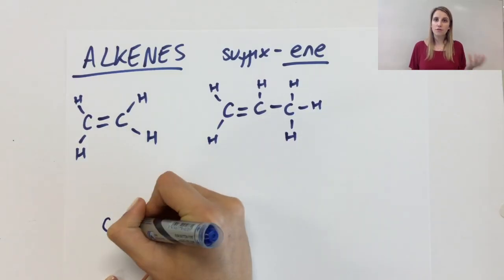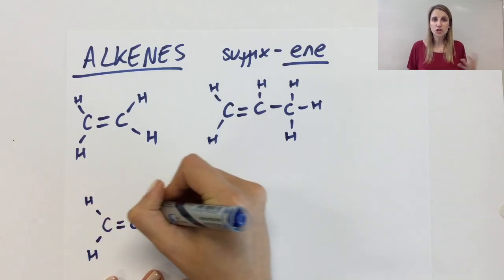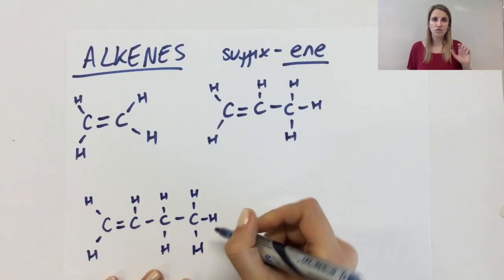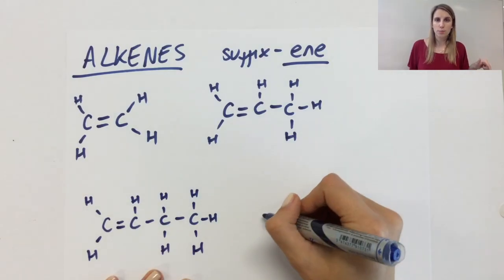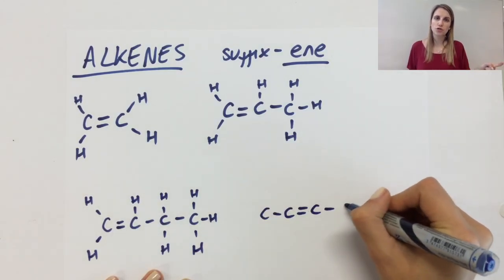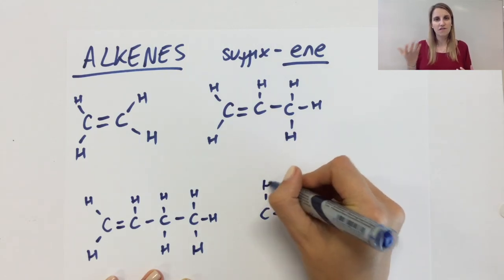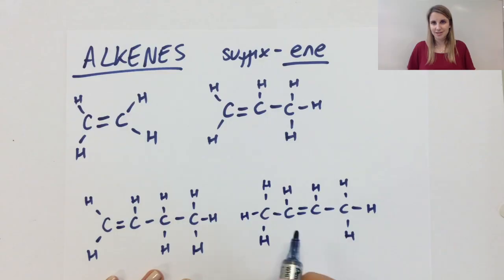And then this one with four carbons. Now I have a choice as to where to put the double bond here. I can either put it on the side or I can put it in the middle. So I'm going to draw those two out separately because they're kind of different to each other. If I flip them over, they aren't the same anymore.